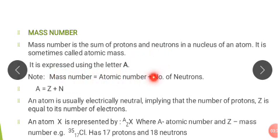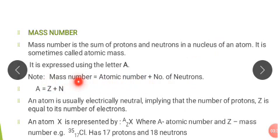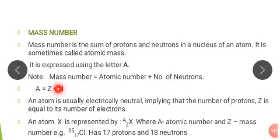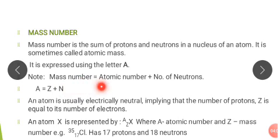There is an important note here. We have said that mass number is the sum of protons and neutrons in the nucleus of an atom. Therefore, mass number A equals the atomic number Z — which equals the number of protons — plus the number of neutrons. So if I have the mass number and the atomic number, I can get the number of neutrons by subtracting.